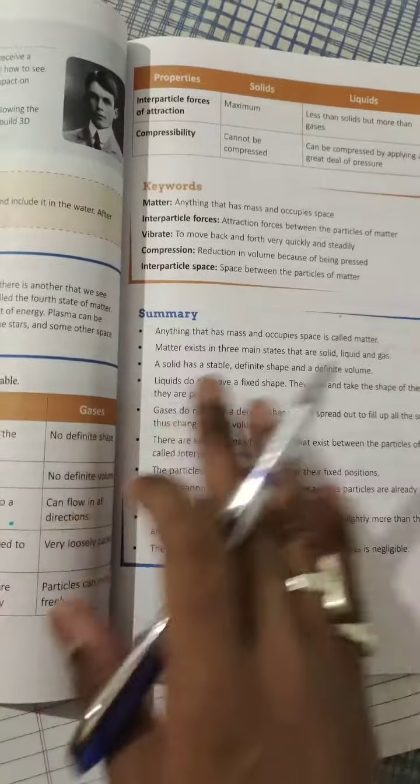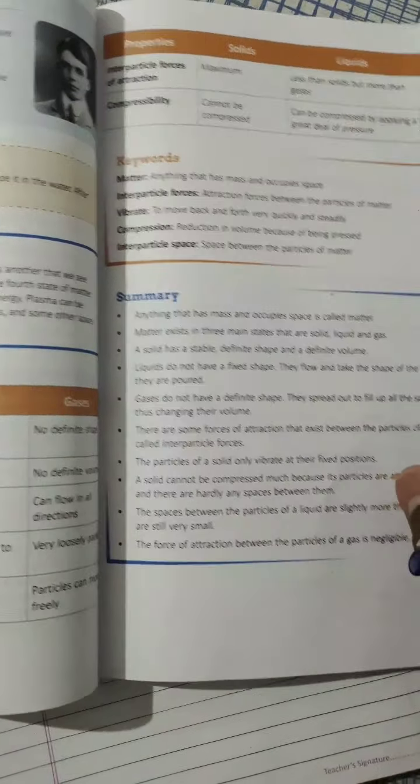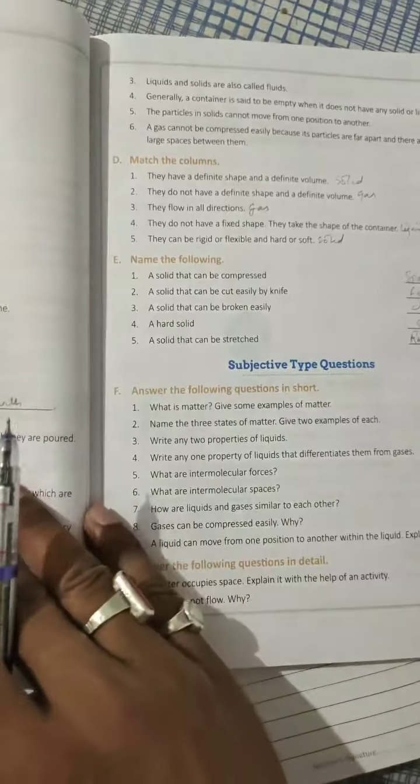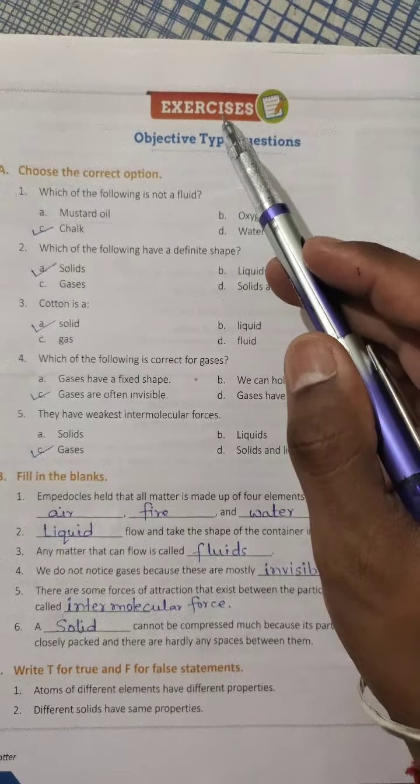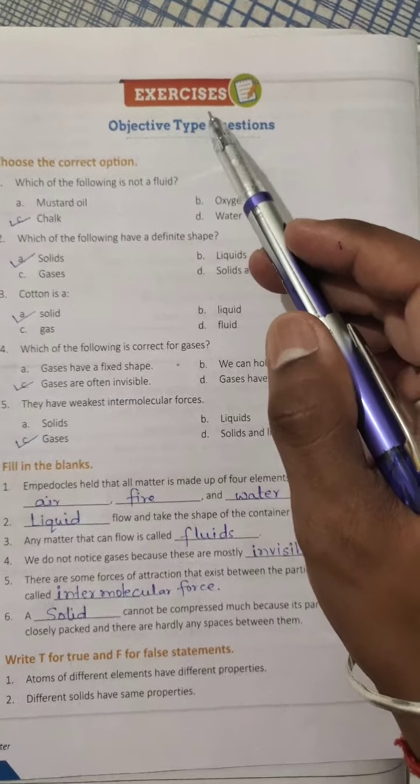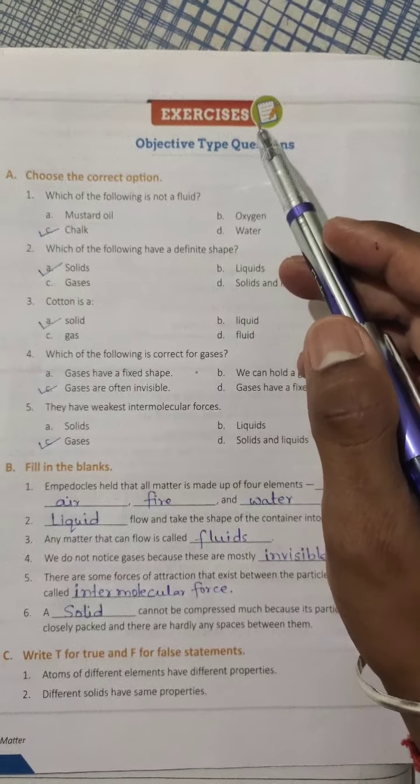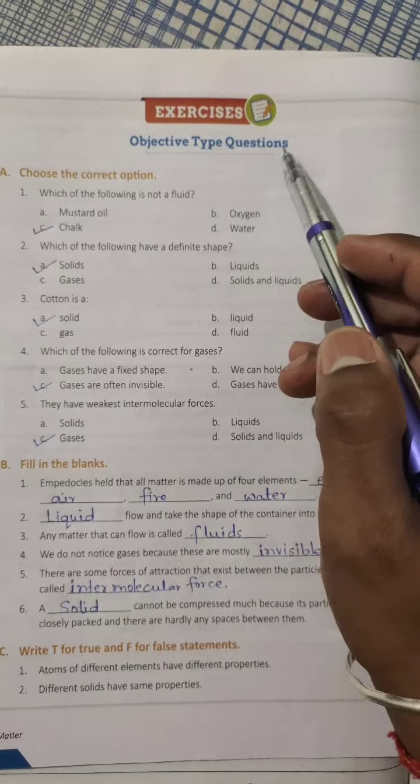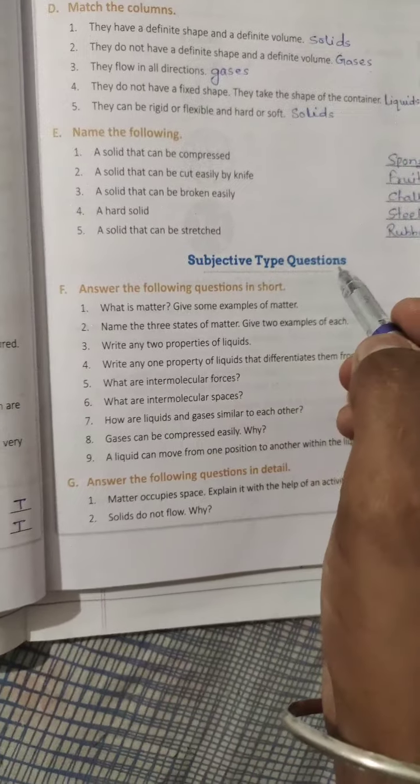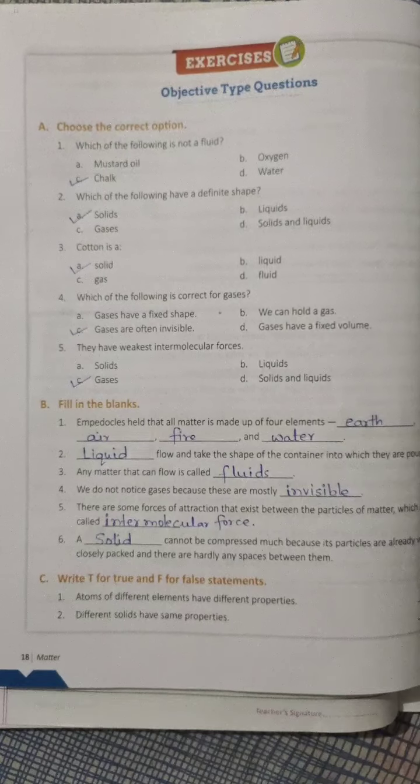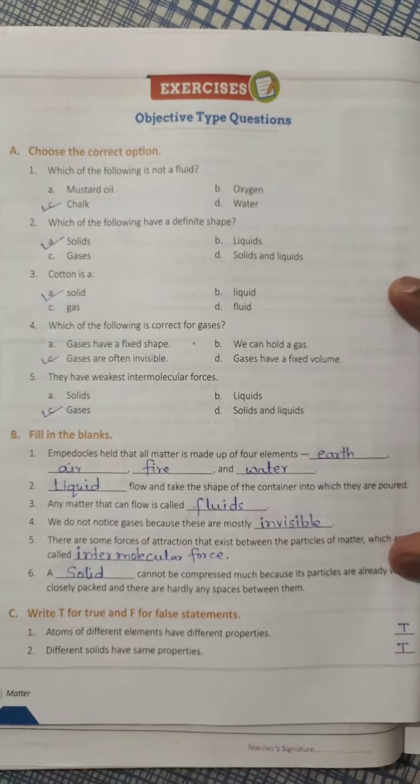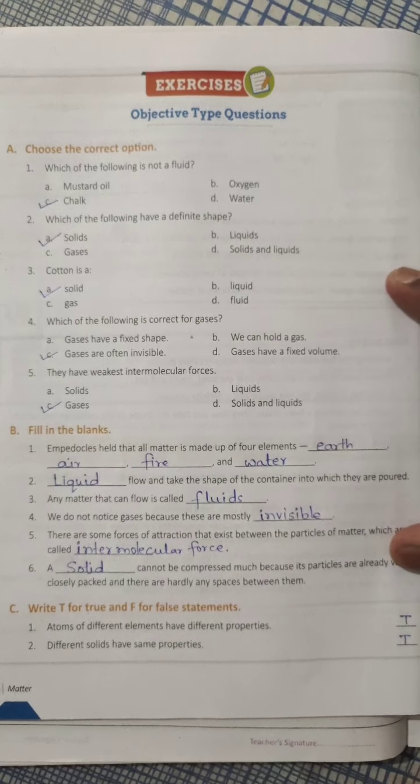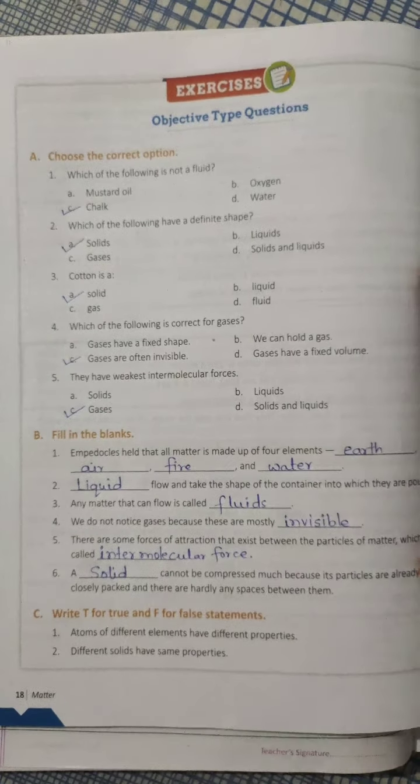Up to here all the topics of this chapter have been covered. Now it's time to do our question and answer. Now in this first chapter there are so many questions which are given in your exercises. So many questions like objective type questions. I have done it for you.